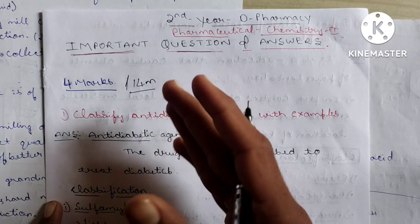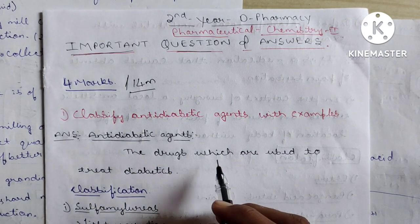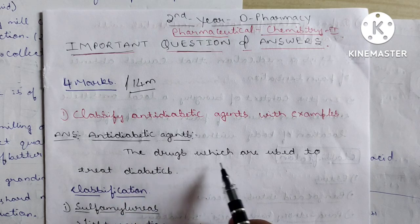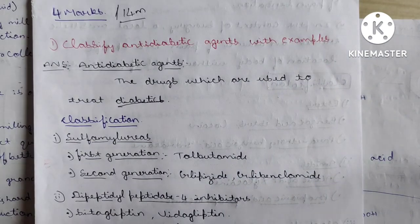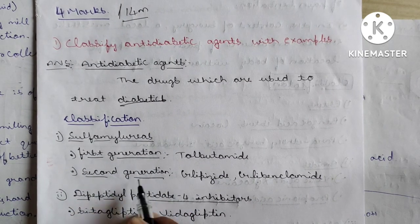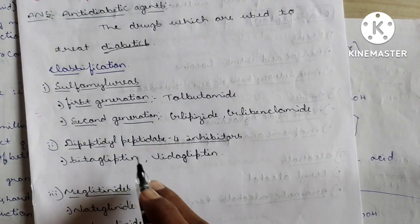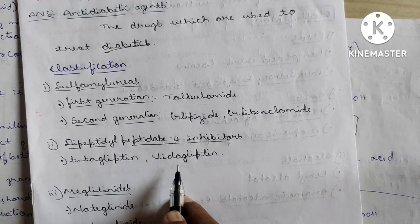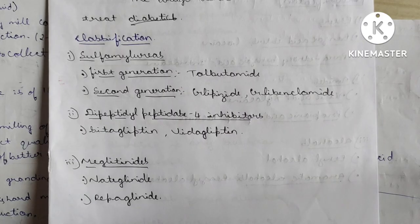Now let's start. Question 1: Classify anti-diabetic agents with examples. Anti-diabetic agents are drugs used to treat diabetes. Classification: Sulfonylureas — first generation: tolbutamide; second generation: glipizide and glibenclamide. Dipeptidyl peptidase-4 inhibitors: sitagliptin and vildagliptin. Meglitinides: nateglinide and repaglinide.